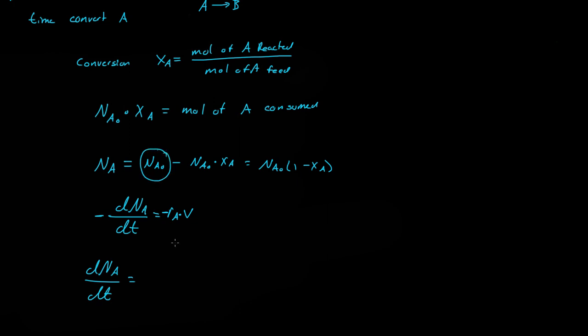0 minus, well again this is constant, so NA naught. So if that's a constant, is XA a constant? No, XA changes with time. So then we have dXA over dt.